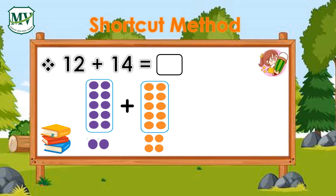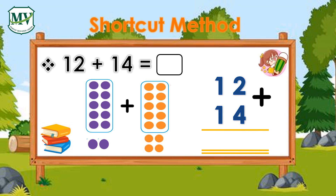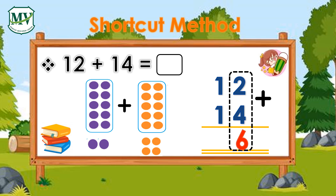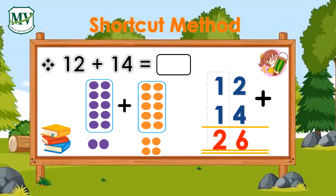Step 1: Write the number sentence in a vertical format, writing the numbers from top to bottom. Step 2: Add the ones — 2 ones plus 4 ones equals 6 ones. Step 3: Add the tens — 1 ten plus 1 ten equals 2 tens. Therefore, 12 plus 14 equals 26.